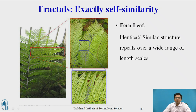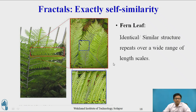The last exactly self-similar example is the fern leaf. Whenever you zoom this part, you can find an identical similar structure repeated over a wide range of length scales. These are the examples of exactly self-similarity fractals.